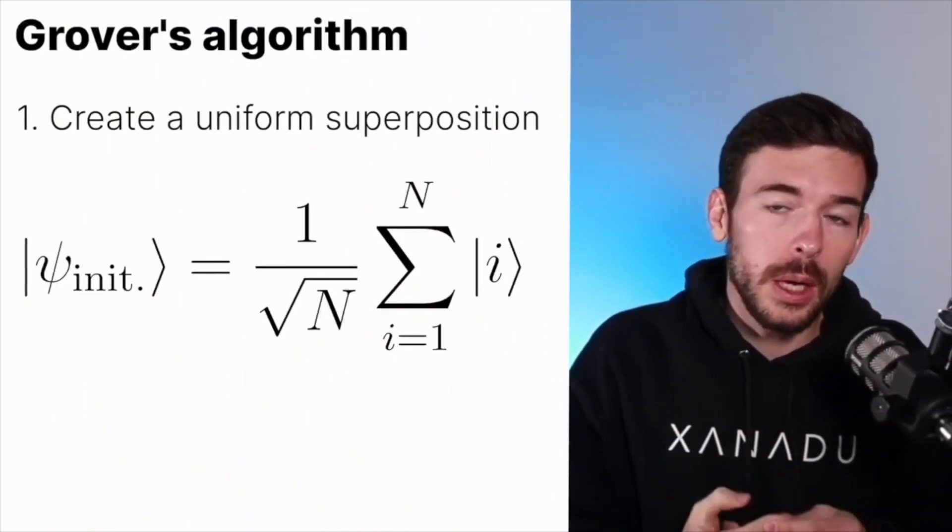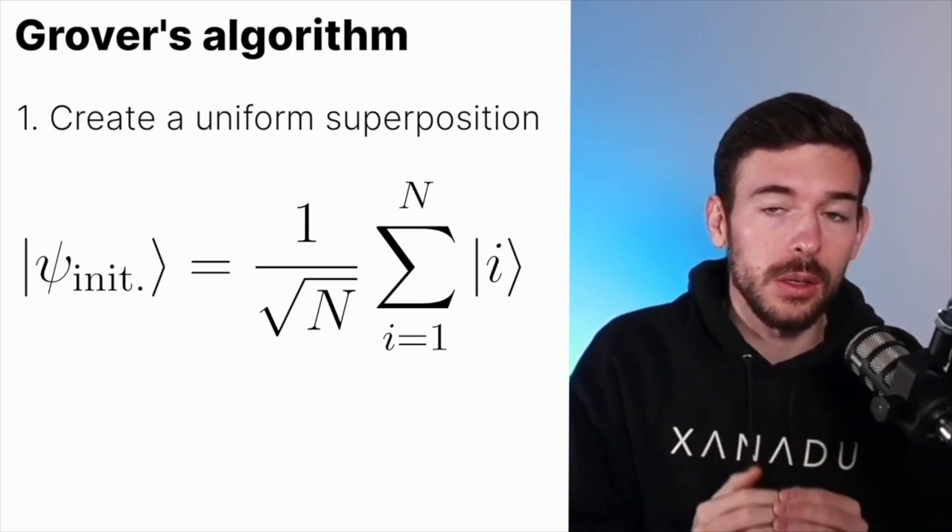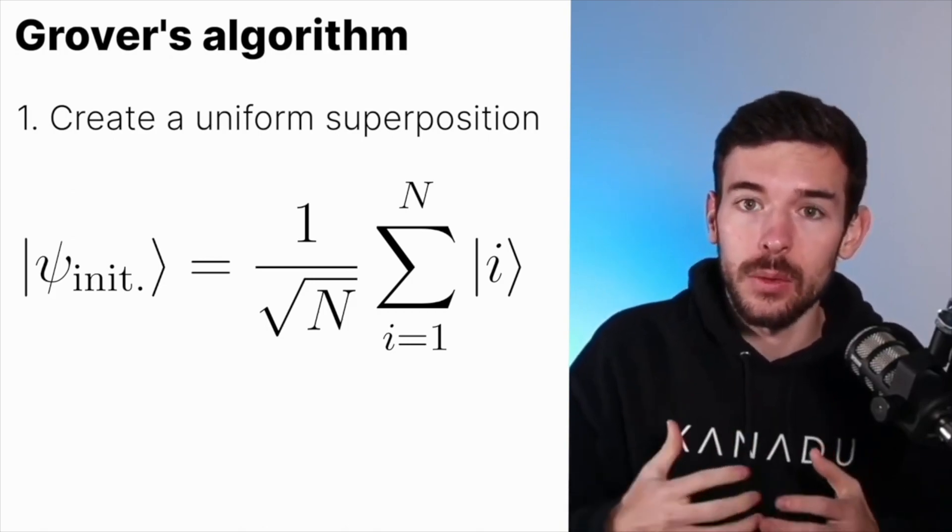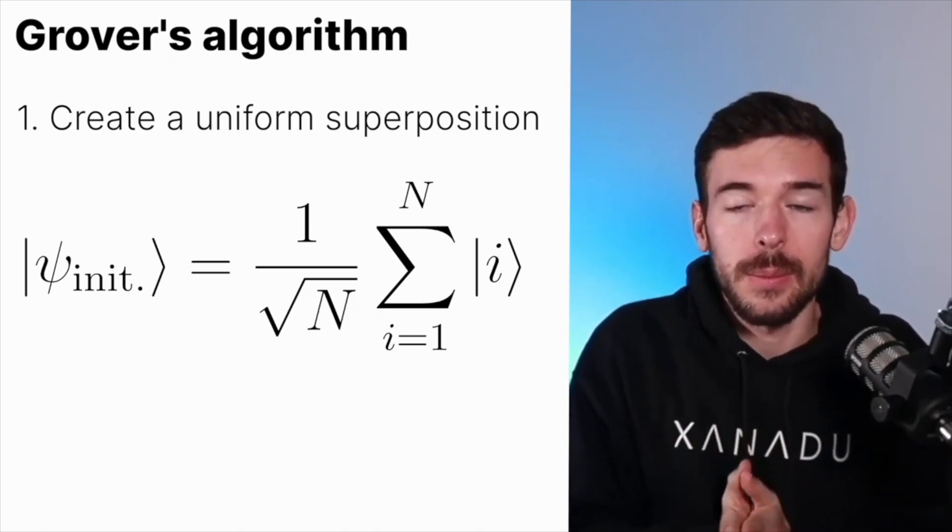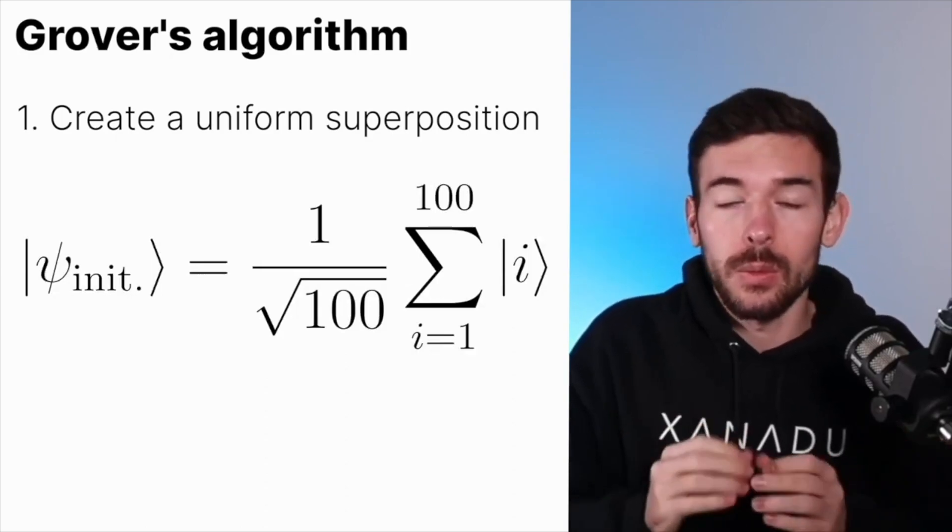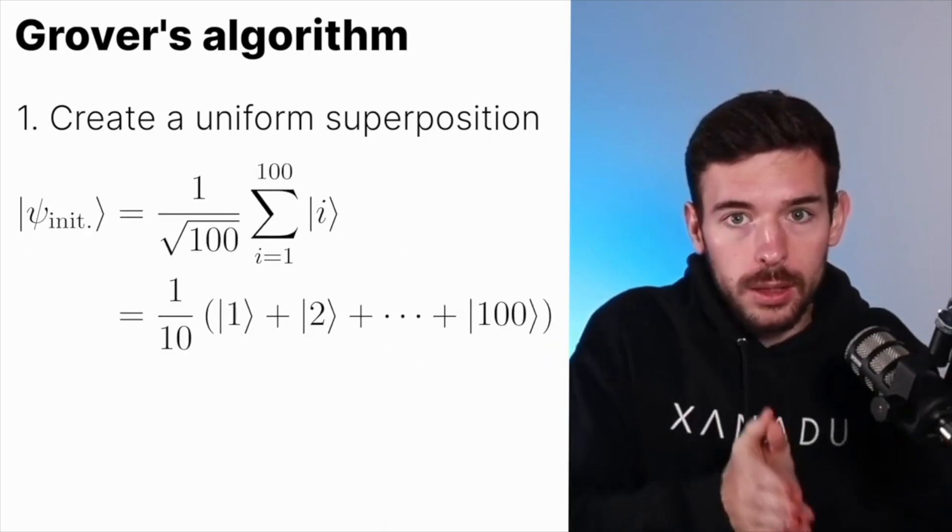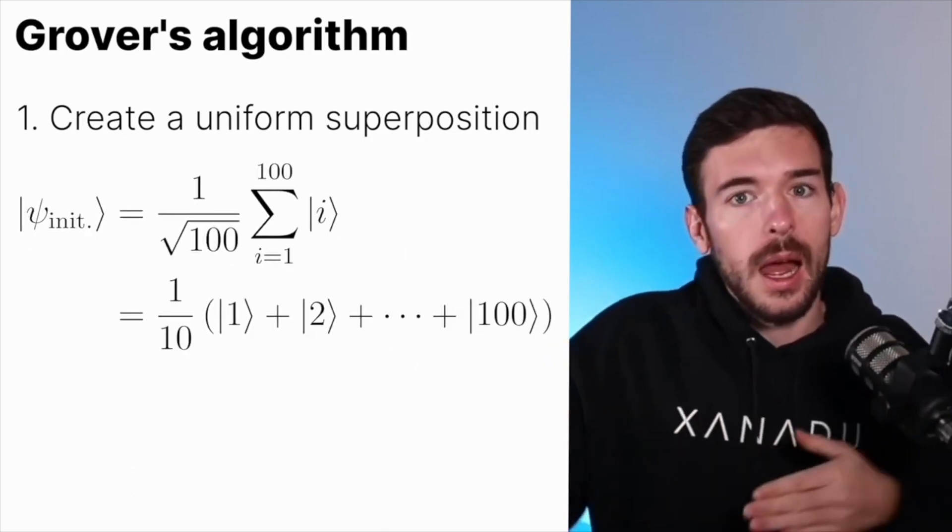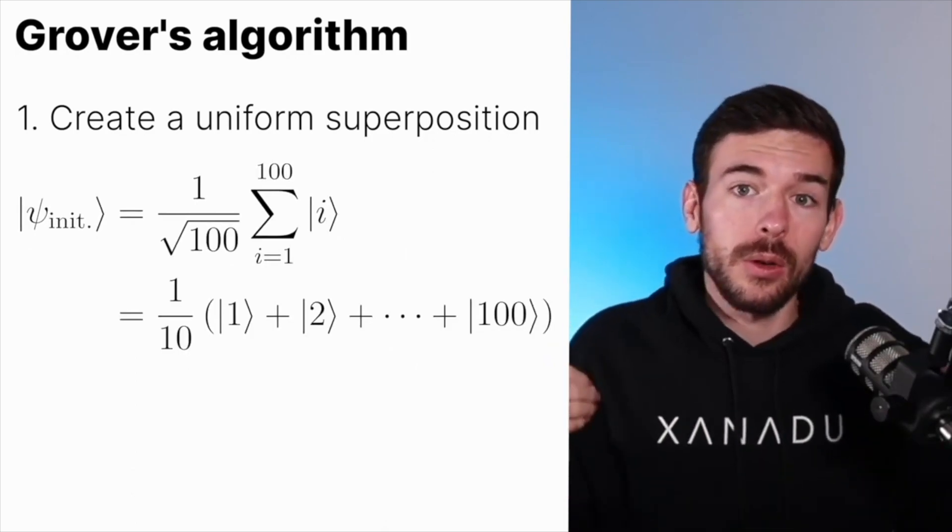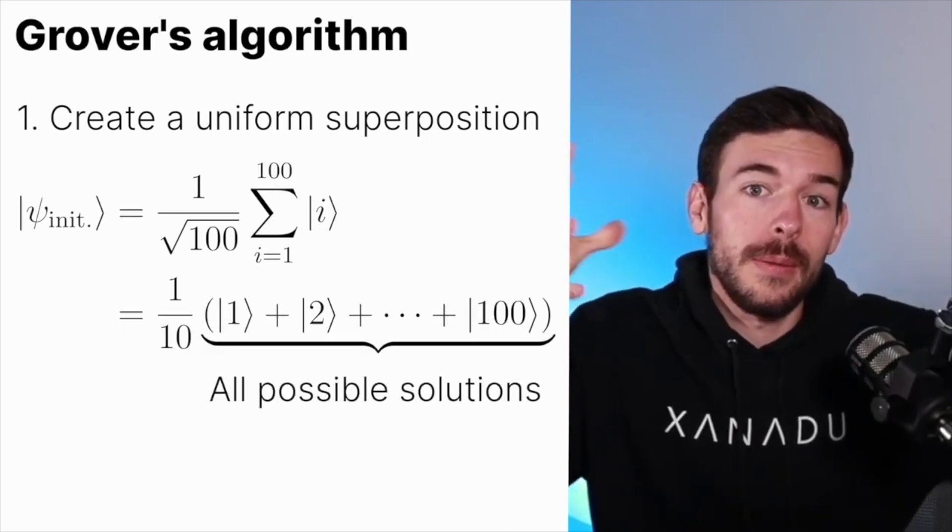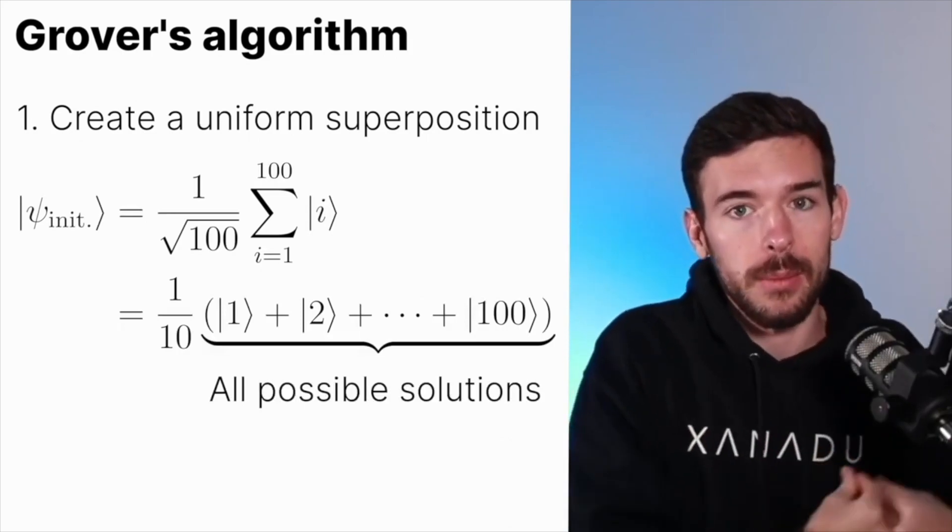We can identify three main steps. First of all, we are going to create an equal superposition of all the possible elements in which we are looking for. For example, in the previous case, it would be an equal superposition of all the elements 1, 2, 3, 4, until 100, because those are all the possible numbers in which my favorite number is.